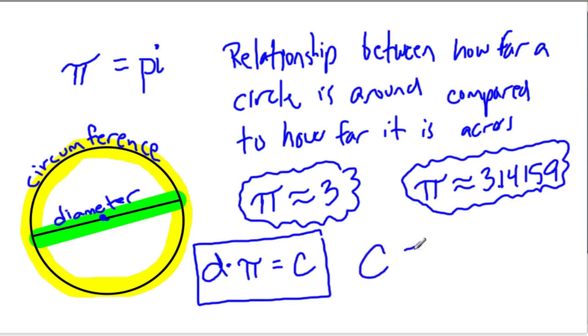Another way you might see it written is like this. Circumference equals pi d, or d pi. Remember, this order doesn't matter if pi or d comes first. That's the commutative property of multiplication.